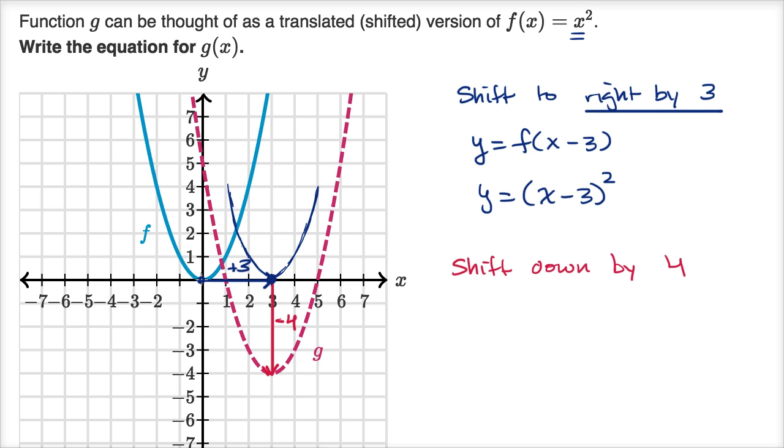When x equals zero for the original f, zero squared was zero, y equals zero. We still want y equals zero. Well, the way that we can do that is if we are squaring zero, and the way that we're gonna square zero is if we subtract three from x.